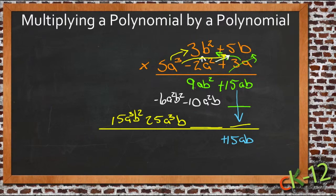And then we have 9ab squared minus 10a squared b. Those are not the same thing, because here the a term is to a first power and here it's to a second power, and vice versa for the b's. So we're just going to have 9ab squared minus 10a squared b.